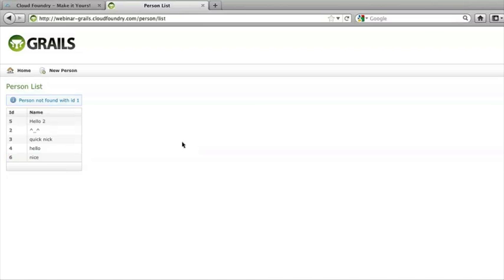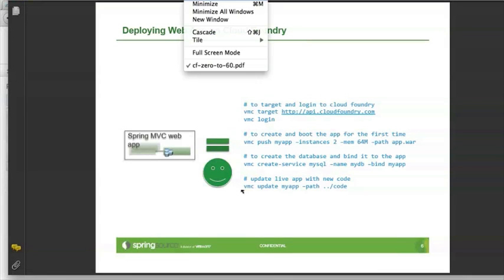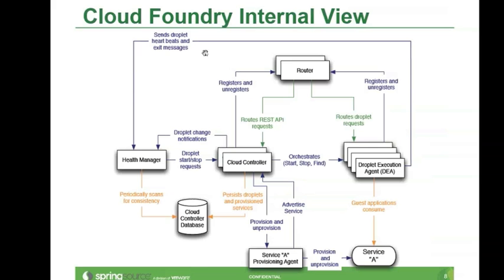With that we can go back to some slides and talk about the architecture for 10 or 15 minutes and then have some time for Q&A. So let's talk about what's going on inside. You've seen we could deploy a very simple application. We could deploy an application that is bound to a database, and we saw in fact two versions: one using Spring Roo and another using Grails, which underneath uses Spring but offers a different user experience as far as development is concerned.